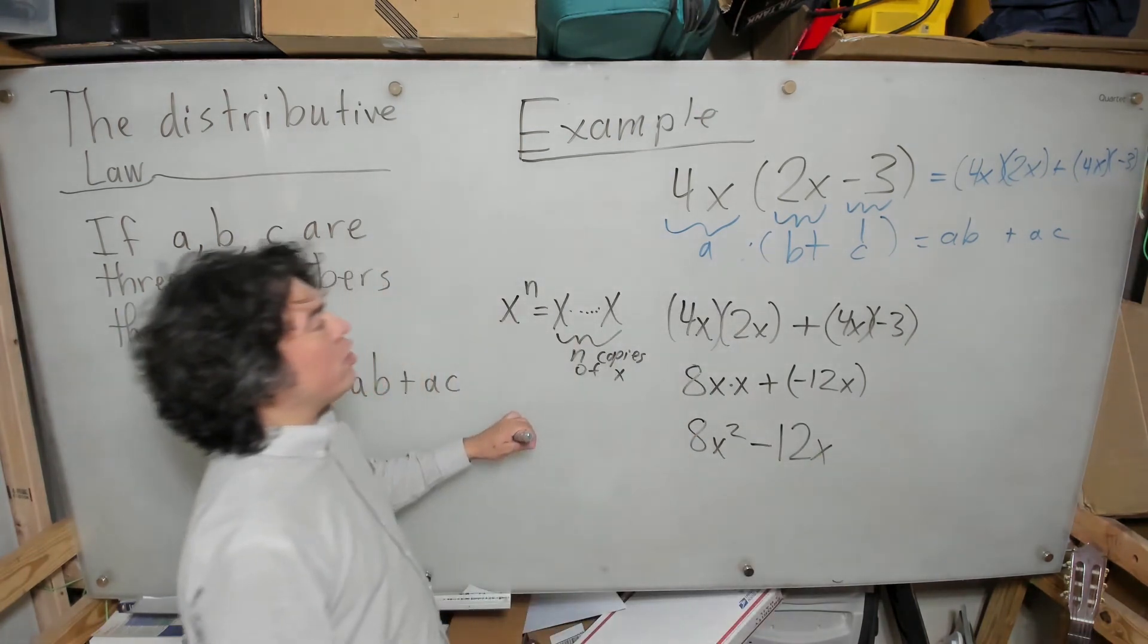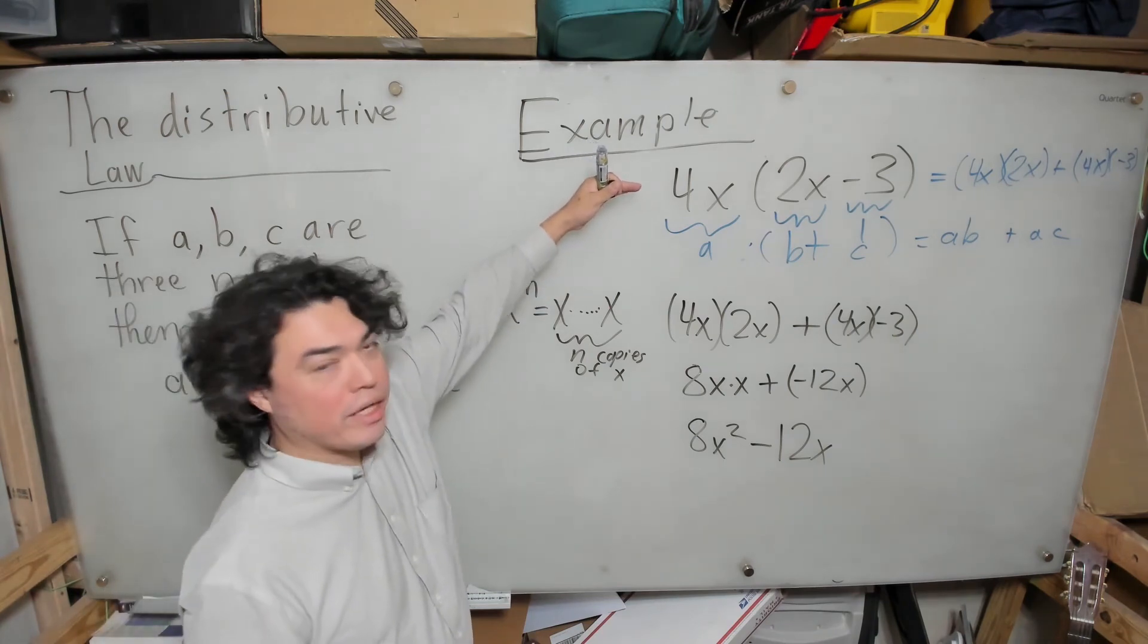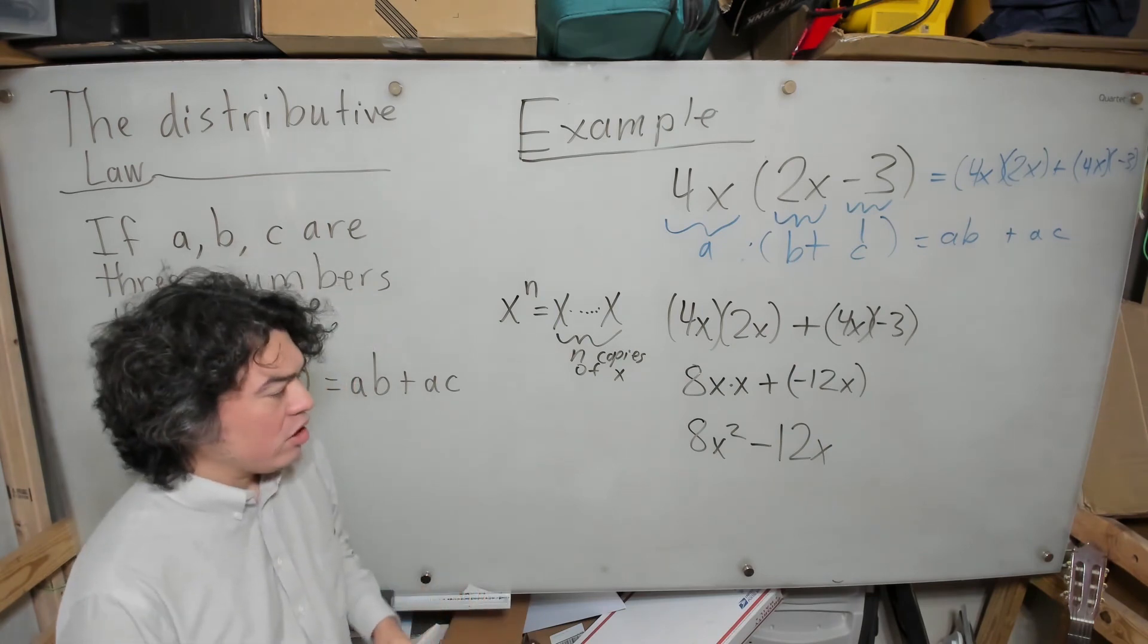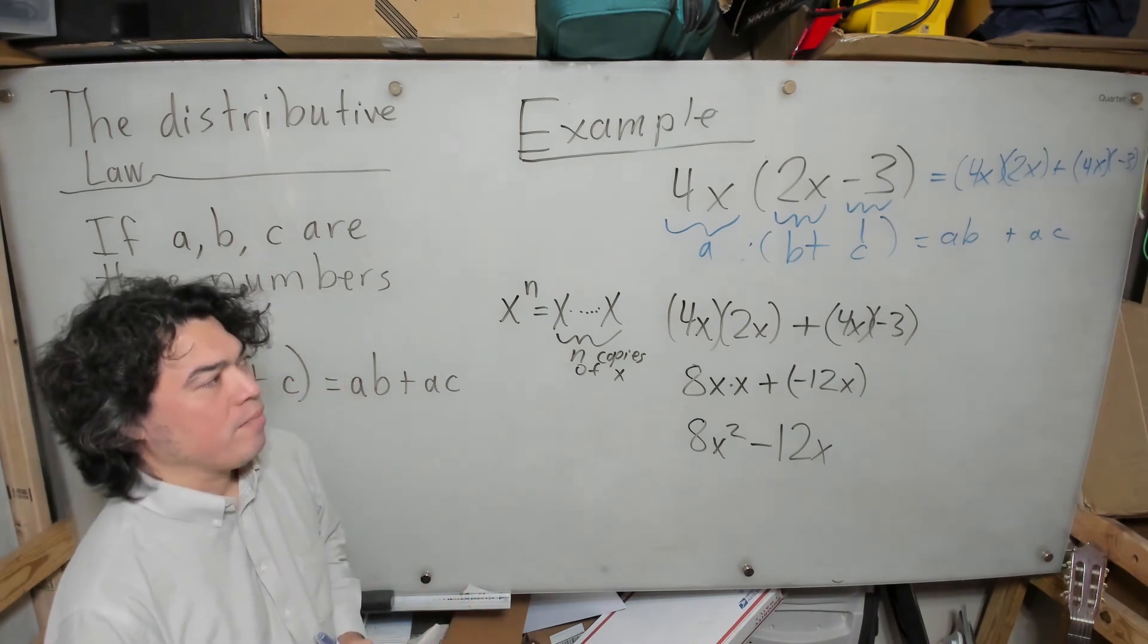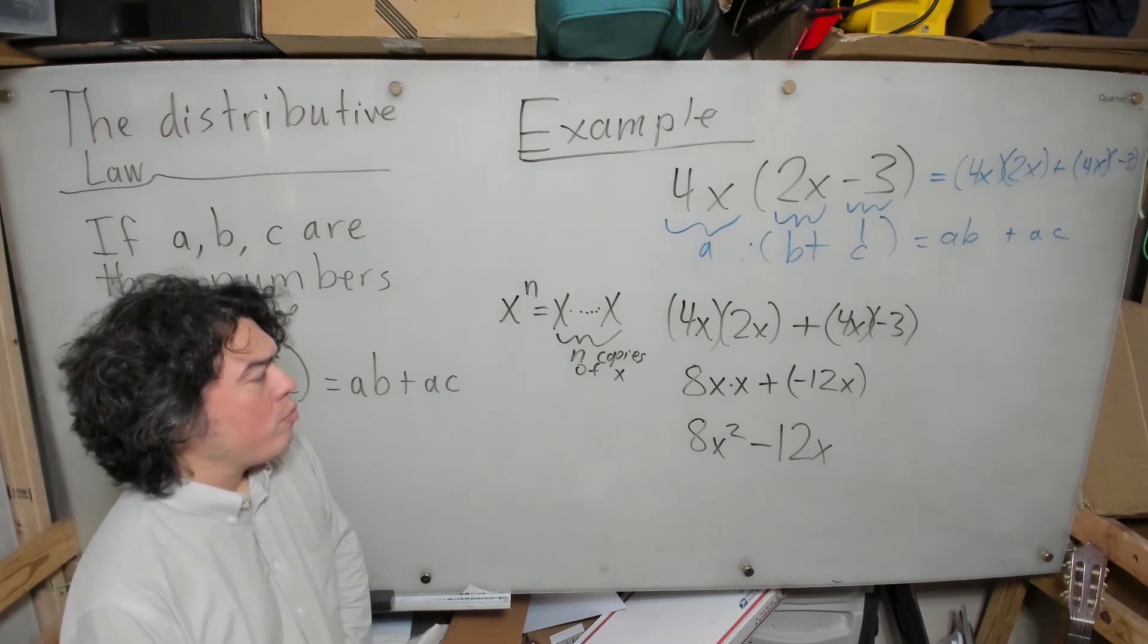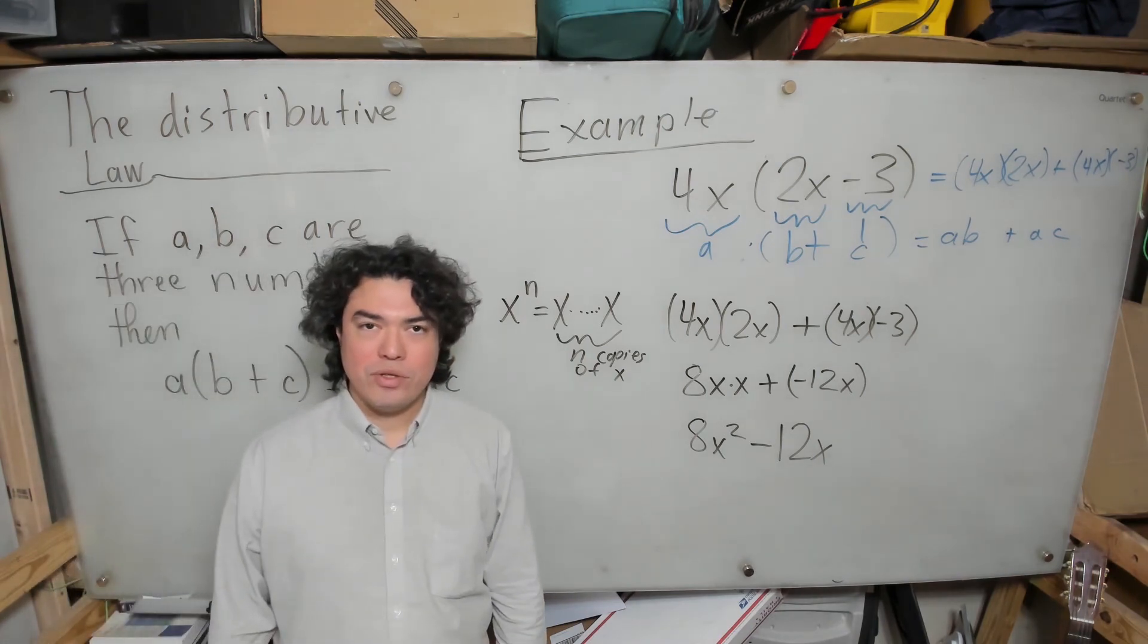So we can conclude that 4x times (2x - 3) becomes 8x² - 12x. We're going to see a lot of examples like this throughout the course of algebra. I hope you guys have enjoyed this example, and I'll see you again soon.